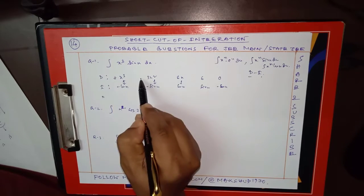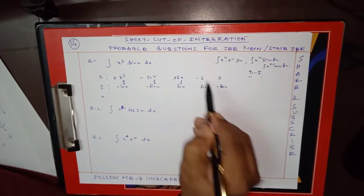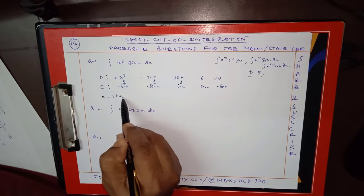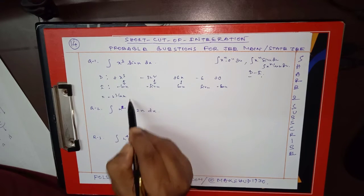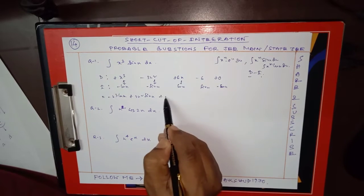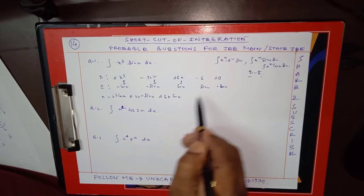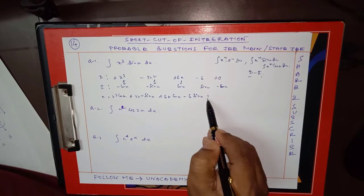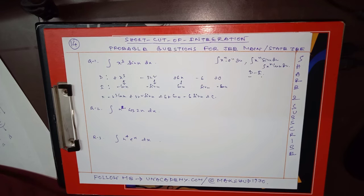So that means it is minus x³ cos x, and minus minus plus gives 3x² sin x. This is plus 6x cos x. This will be minus 6 sin x, and this is 0. So this is plus c.